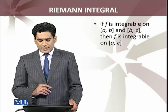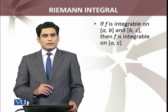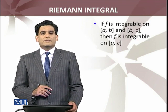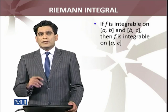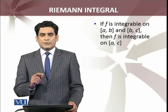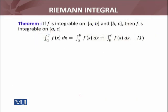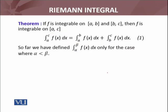Let's see what we have: if f is integrable on the closed interval [a, b] and [b, c], then f is integrable on the closed interval [a, c], where b is the point inside between a and c. The integral from a to c equals the integral from a to b of f(x) dx plus the integral from b to c of f(x) dx, where b is between a and c. Let's prove this — but before proving it, we define two types of integrals.